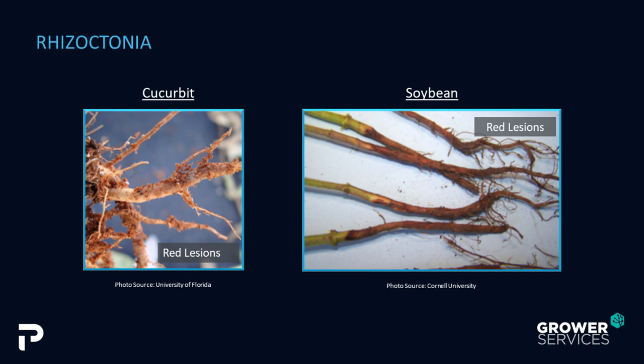I wanted to show you the distinct red lesions of Rhizoctonia. This picture of cucurbit – the squash family, things like squash or cucumber – shows the red lesions at the base in that rooting. Our roots are turning a distinct red color with no white roots left. Looking at the soybean picture, it's a distinct red, burnt-orange color with no new root growth. The stems at the midpoint have dampened off and closed shut – those plants will essentially fall over and die. If we see red lesions combined with some type of web blight, we can identify this as Rhizoctonia.